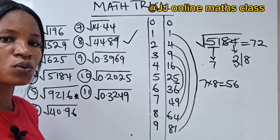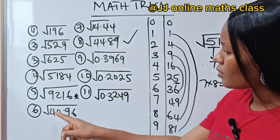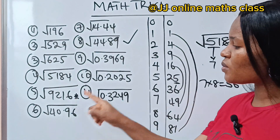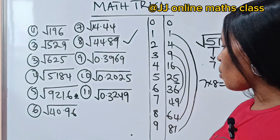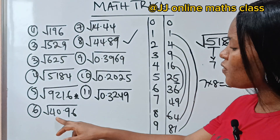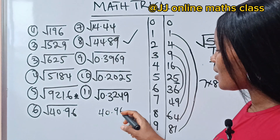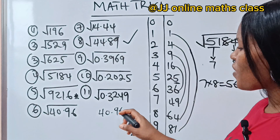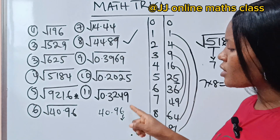I won't solve the previous one since you now understand the method — try to solve it yourself. Now let's move into decimal numbers. The first decimal example is square root of 40.96.